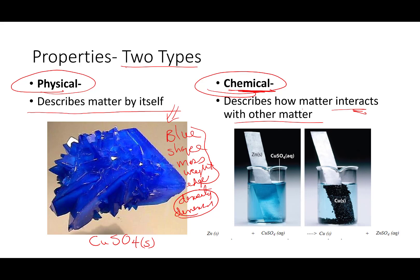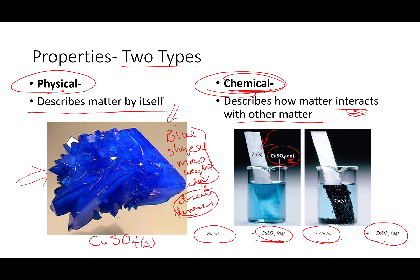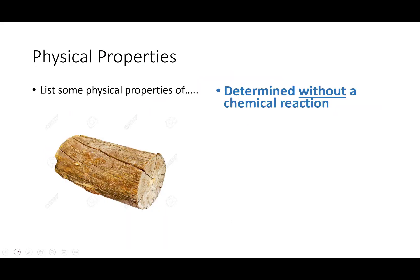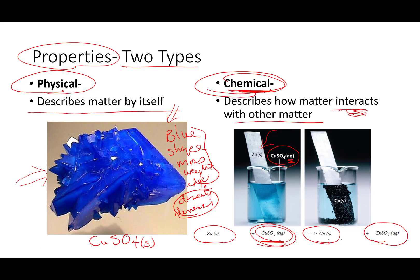A chemical property is how the matter reacts or interacts with something else. If you take copper sulfate and dissolve it in water, you get copper sulfate aqueous — aqueous means dissolved in water. If you took copper sulfate and put a piece of zinc metal with it, you would get a chemical reaction producing solid copper plus aqueous zinc sulfate. That reaction — copper sulfate reacting with solid zinc — is a chemical property of copper sulfate. A massive hint with a chemical property is it always talks about other matter.